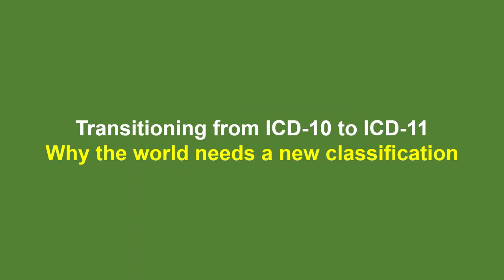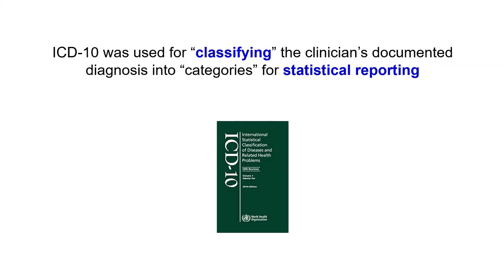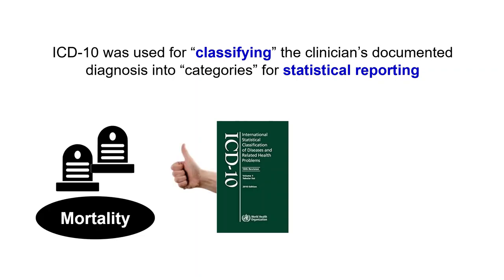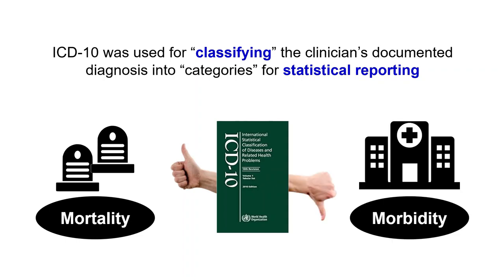We already have ICD-10, so why do we need a new classification? There are many reasons, but let's start with purpose. ICD-10 was used for classifying the clinician's documented diagnosis into categories for statistical reporting. Although very useful for mortality, which is its original use case, it was deficient in reflecting the level of detail required for morbidity. These details are needed for reporting the complexity of a case, risk adjustment, and a wide range of other applications such as research, evaluating patient safety and quality, evaluating health system performance, and reimbursement in case of DRGs or case-mixed systems.